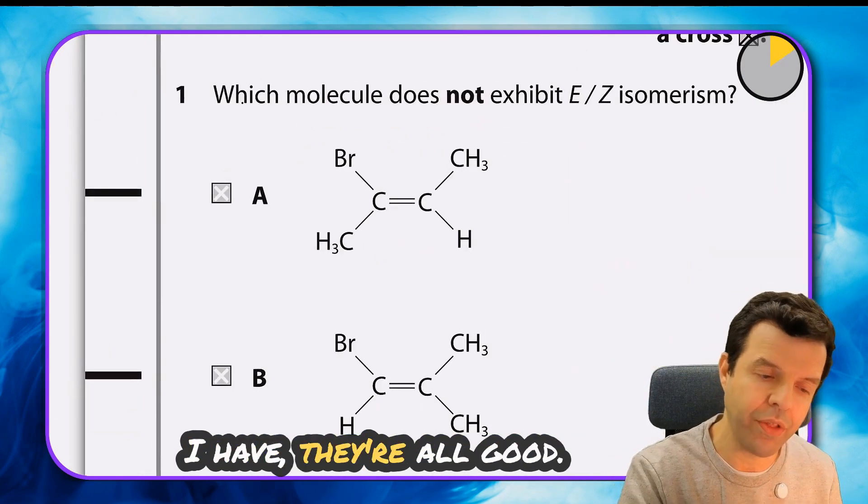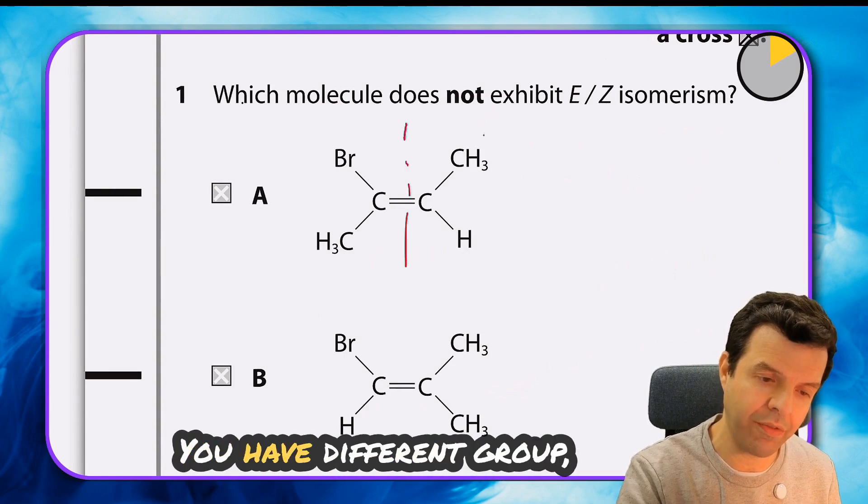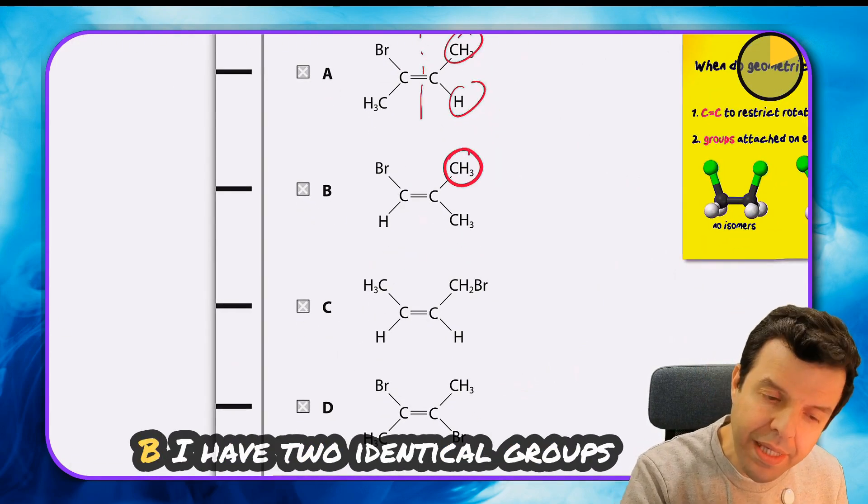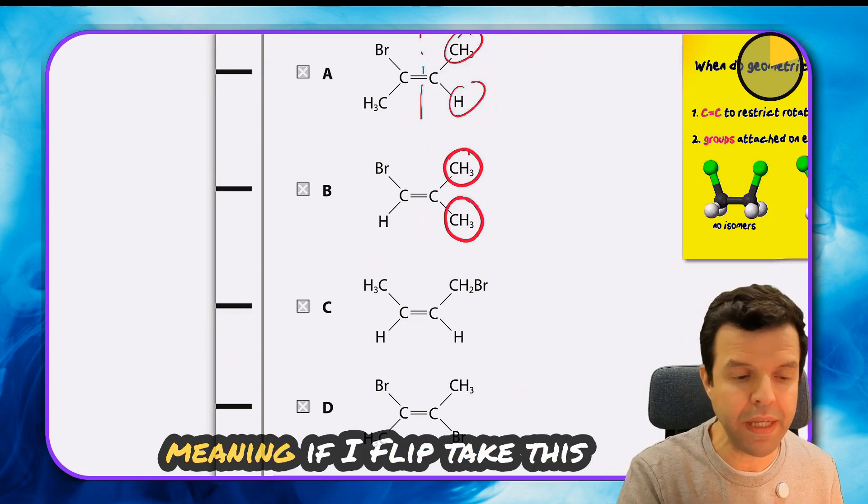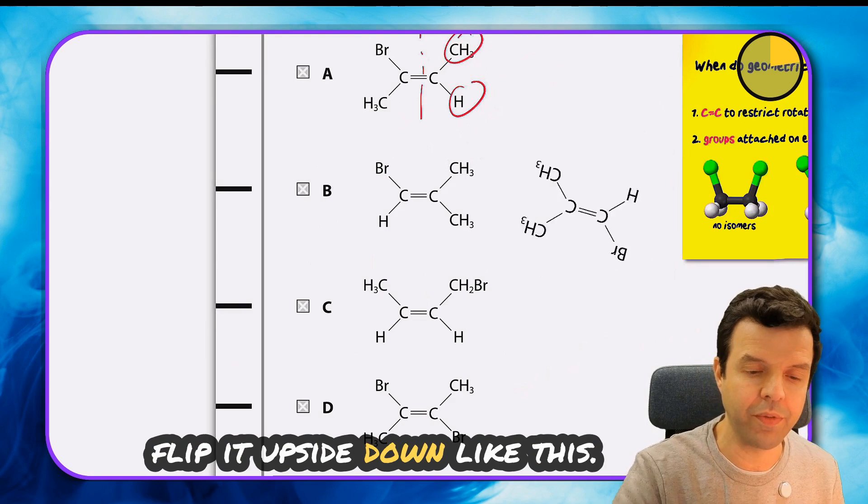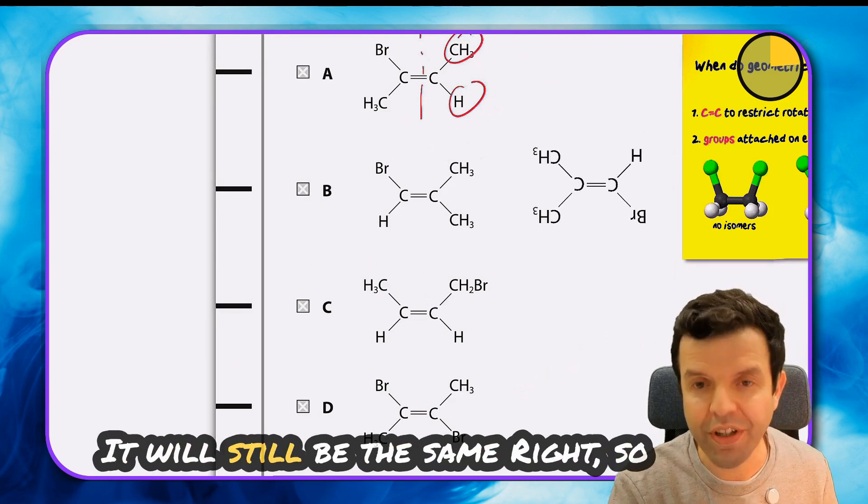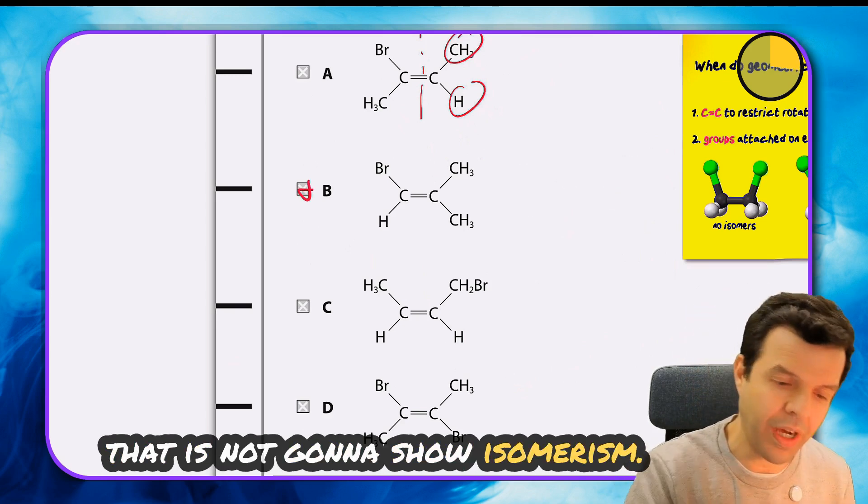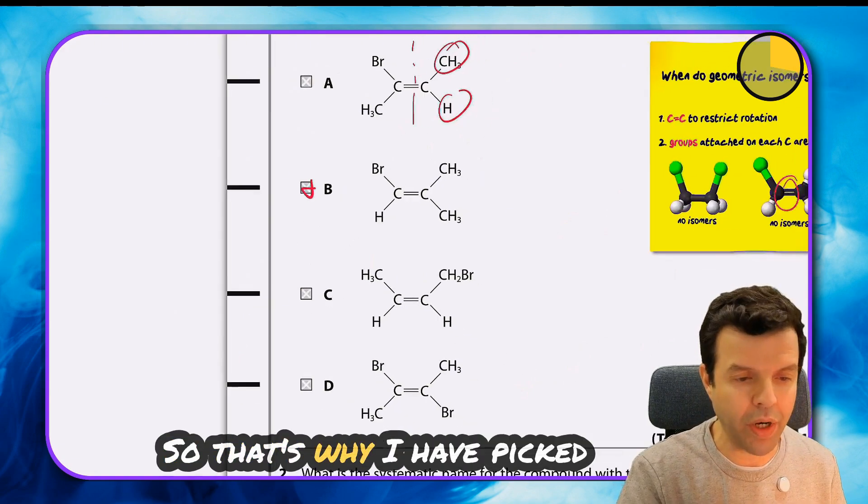They're all good, with different groups on each carbon, except for B. I have two identical groups, meaning if I flip this upside down like this, it will still be the same. So that is not going to show isomerism.